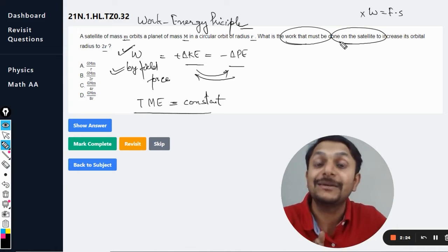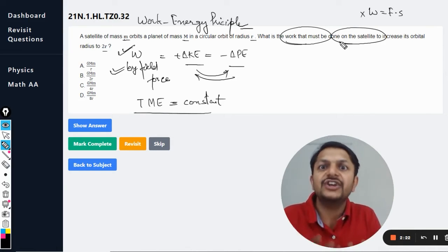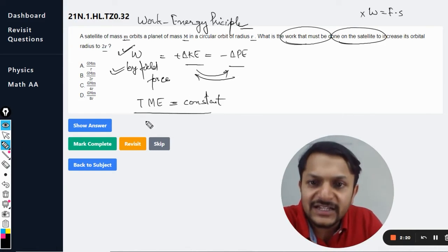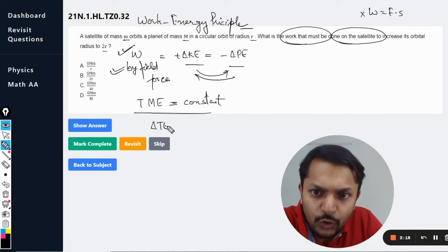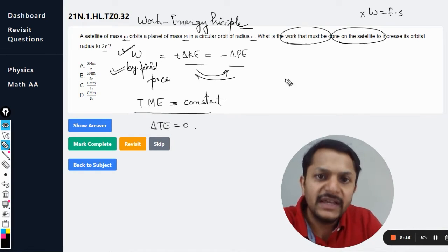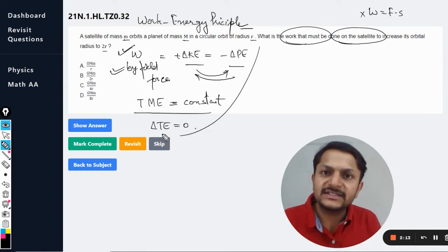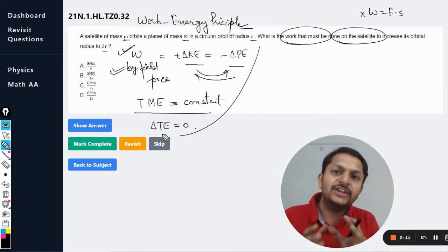It was having some mechanical energy which was definitely constant because gravitation is a conservative field, but now some energy has been added into it. So there is a change in total energy.